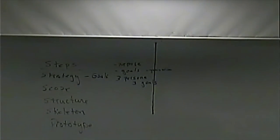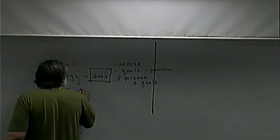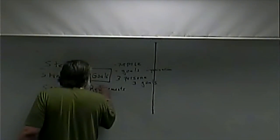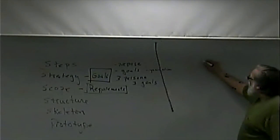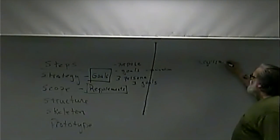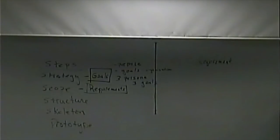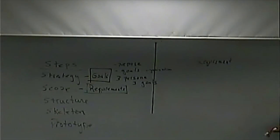Now we're going to talk about the other phases. The next phase is called the scope phase. In the strategy phase we defined the goals; in the scope phase we define the requirements. Another way to say scope is the requirements — the list of requirements. A requirement won't be something assumed like 'it will have good navigation.' The requirement is what we're going to put on the website to achieve the goals.